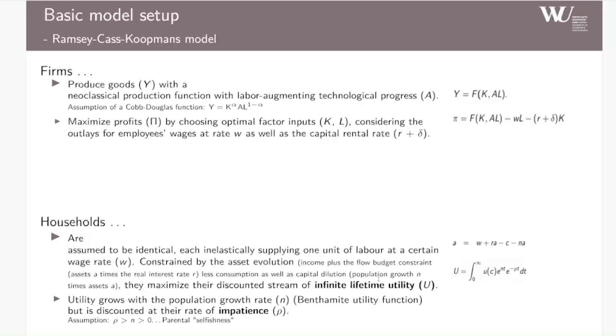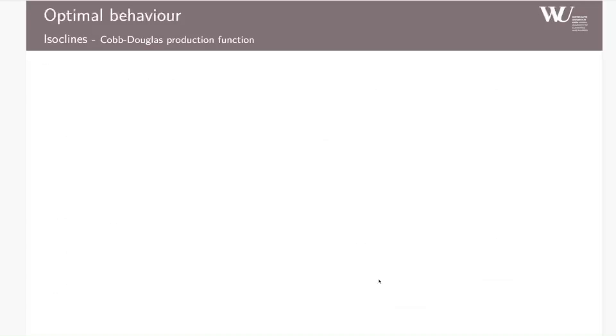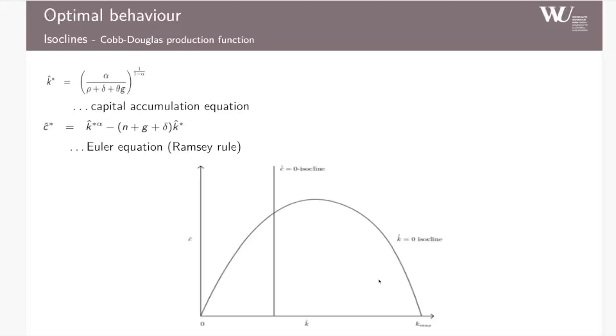The optimal behavior of households and also firms can then be described by two isoclines: the capital accumulation equation on the one side and the Euler equation, also called Ramsey rule according to Frank Ramsey, on the other side. Of course, it's also always most intuitive to look at things graphically. Therefore, you can plot them in the so-called phase diagram, and we can see capital and consumption, both in units of effective labor. Capital on the horizontal axis, consumption on the vertical one, and we have the two isoclines. The consumption isocline is vertical, whereas the capital isocline is a hump-shaped curve.